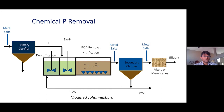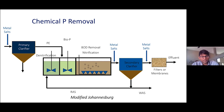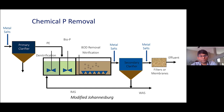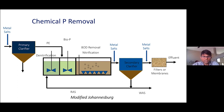For chemical phosphorus removal, you dose metal salts — commonly alum or iron salts — at different locations. It can be single point or multiple point; multiple point provides better control over removal and more efficiency. Typical dosing locations are upstream of primaries, upstream of secondary clarifiers, or upstream of tertiary filtration. To achieve cost-efficient removal, you combine biological and chemical phosphorus removal — you remove as much as possible biologically and then polish with chemical addition and tertiary filtration.